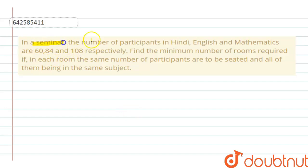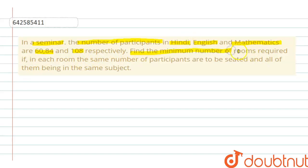In a seminar, the number of participants in Hindi, English, and Mathematics are 60, 84, and 108 respectively. We have to find the minimum number of rooms required if in each room the same number of participants are to be seated.